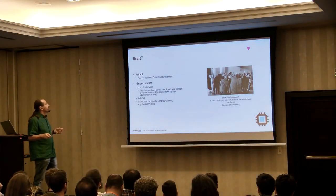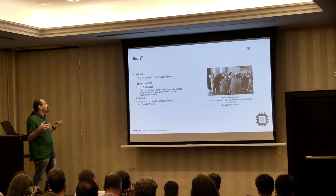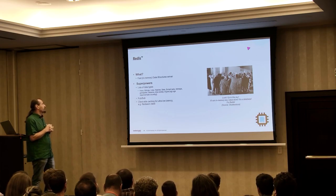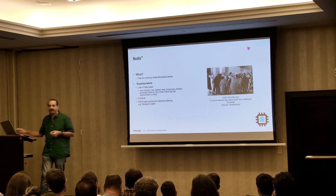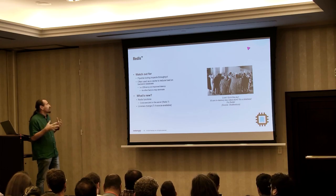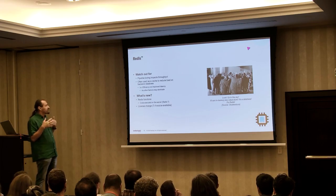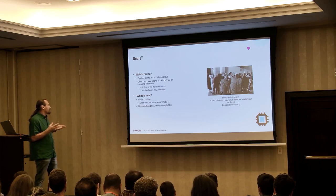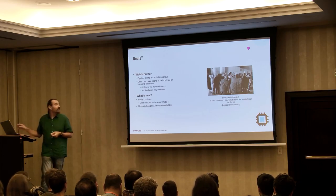Number twenty-two: Redis — a fast in-memory data structure server. It's got lots of data types and is also a pub-sub system. Some Redis clients give you client-side caching for ultra-low latency. It's often used as a cache to reduce load on the back end, but from our experience it doesn't necessarily help with reducing latency. The main news on the Redis landscape is a license change — it's no longer open source, but there's a fork you can use.